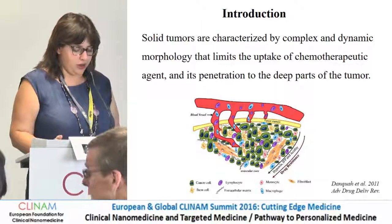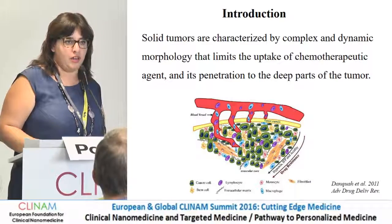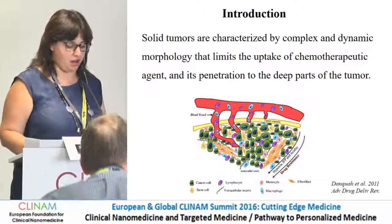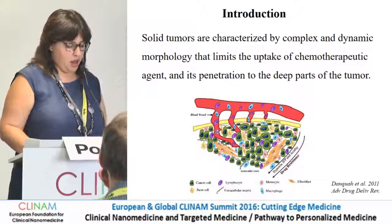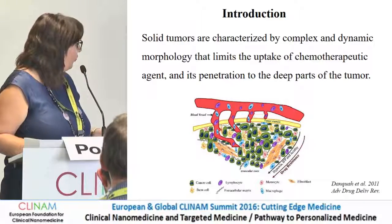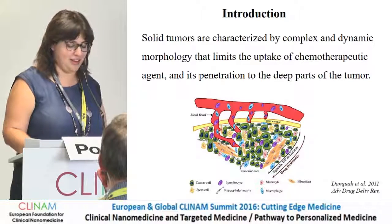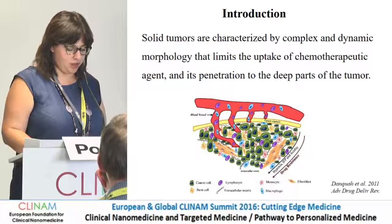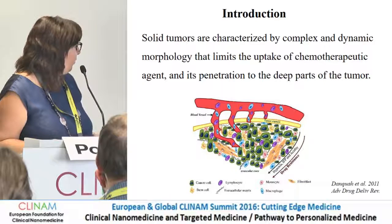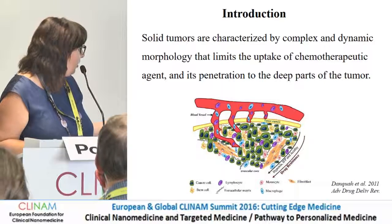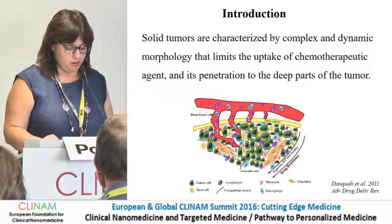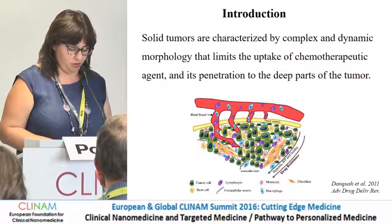In order for an anti-cancer drug to be effective, it must successfully reach the tumor, distribute, and in some cases enter the tumor cells. As you can see, the solid tumor has a complex morphology. Cancer cells are embedded within the dense stroma, which contains different kinds of cells. We can see immune system cells like lymphocytes and macrophages, and extracellular matrix.